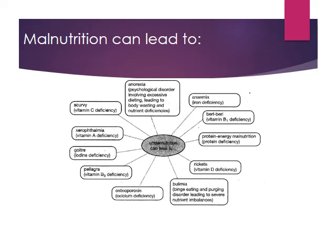Just pause for a minute and have a look at this mind map which talks about what malnutrition can lead to. We've got some things that we've heard of, like anorexia and bulimia, which we looked at in the last unit, along with osteoporosis and anemia. But then there's other things we don't really hear about a lot, which is scurvy, goiter, pellagra, rickets, and beriberi. They're very much diseases in developing countries that still exist. You might want to make a note of those and draw a quick little mind map for yourself.